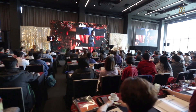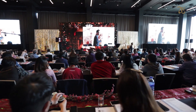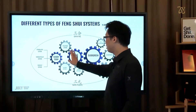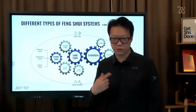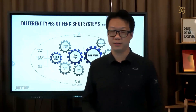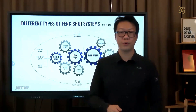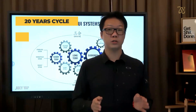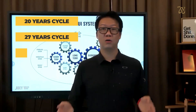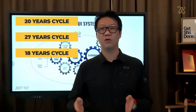So this type of feng shui is difficult to learn because it involves a lot of observation, but it's easy to use. Whereas if you're talking about short-term and long-term, this requires adjustments. When we say long-term in feng shui, we are referring to the 20-year cycle, or the 27-year cycle, or the 18-year cycle of feng shui.